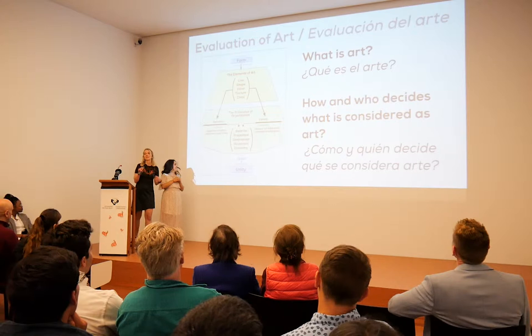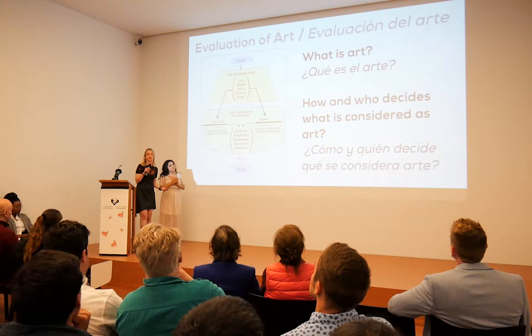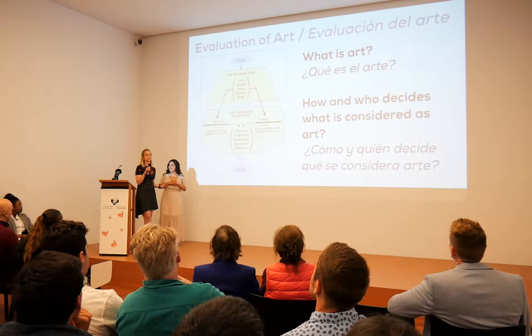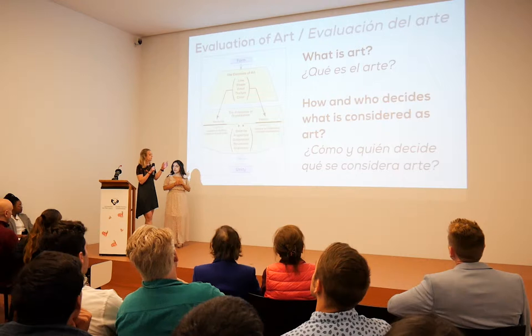One of the main steps is basically the evaluation of art — what is art and who decides what's art. In the evaluation of art there are basically two main frames: one is objective, the other one is subjective.